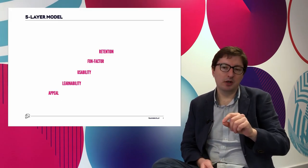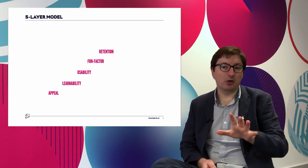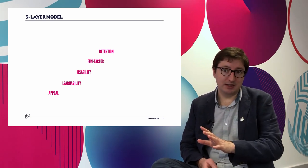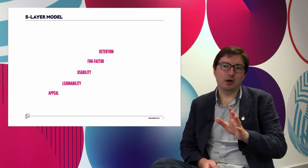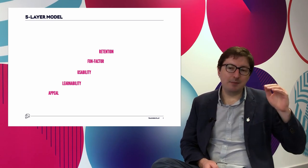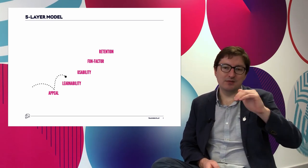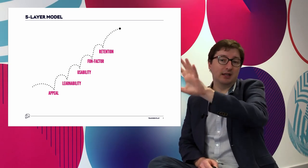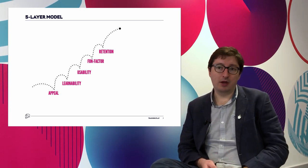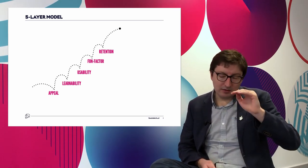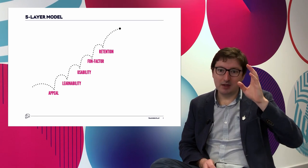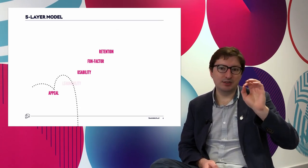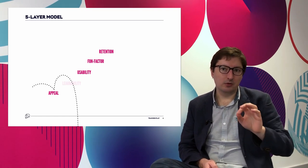In the Games User Research book, we presented a five-layer model of player experience. Just to underline how important good learnability is, it's right there at the bottom after appeal. A game has to pass each layer — has to effectively deliver in each category — before it can really achieve fun and engaged players. Learning is right there at the bottom, just after first impressions. And if players can't nail learnability, if they're unable to teach players the rules effectively, then things don't go well.